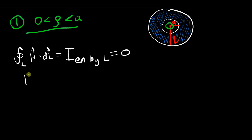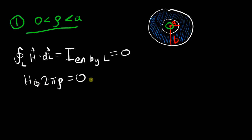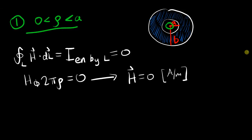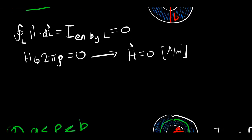When you evaluate the line integral with zero enclosed current and solve for H, you find that H equals zero amperes per meter in the region where ρ is between 0 and a.